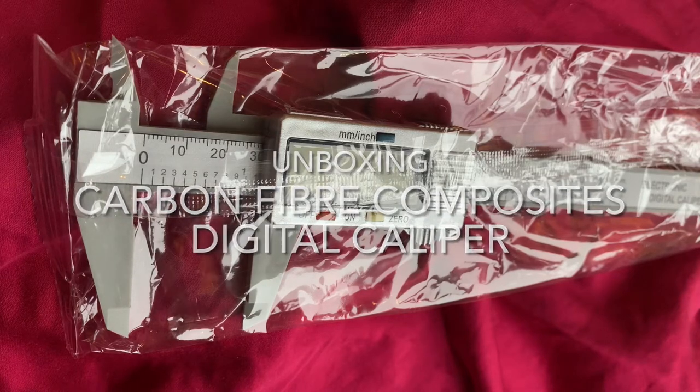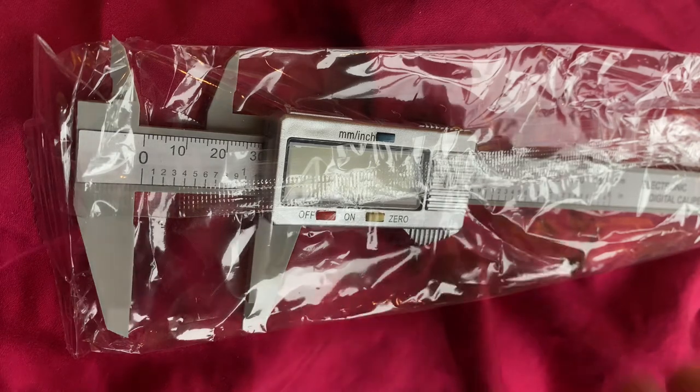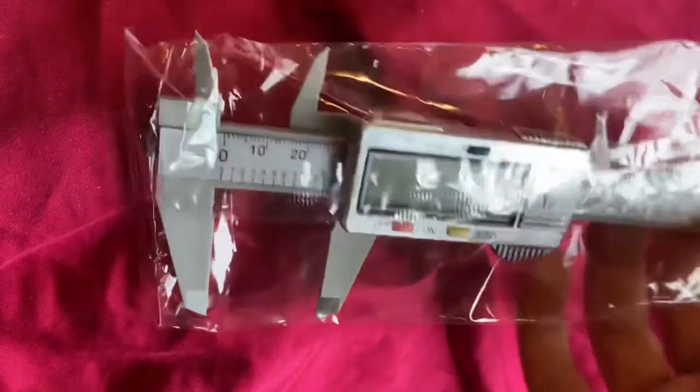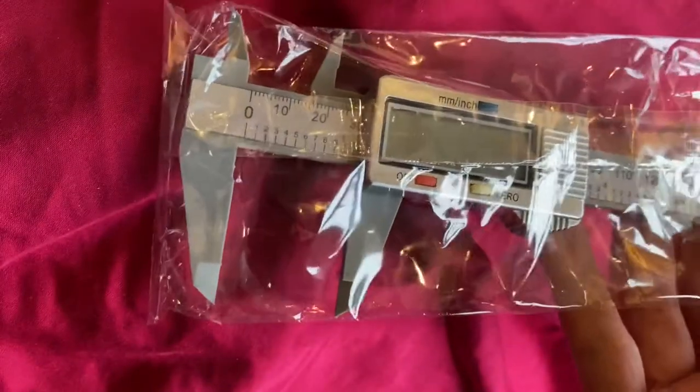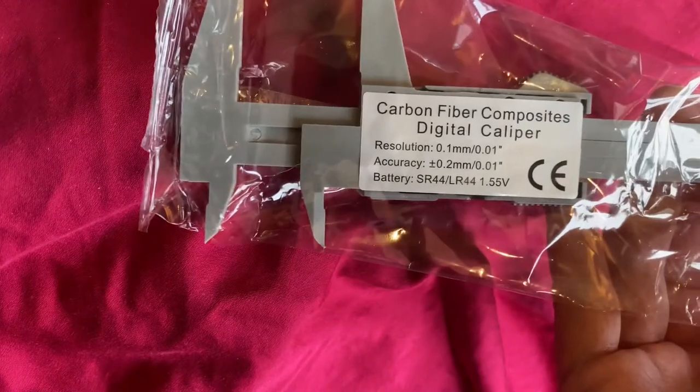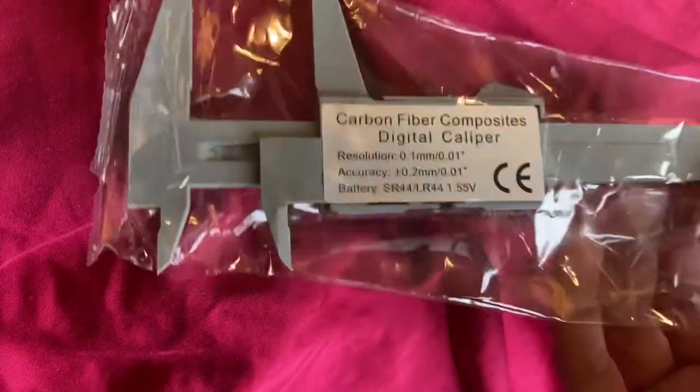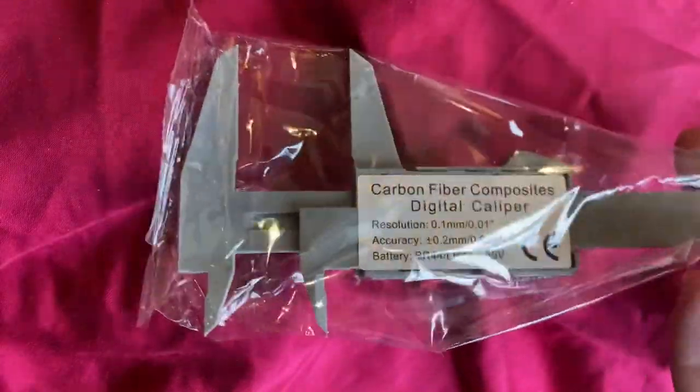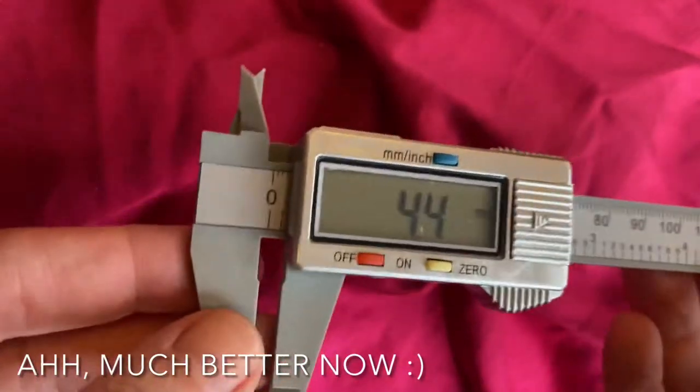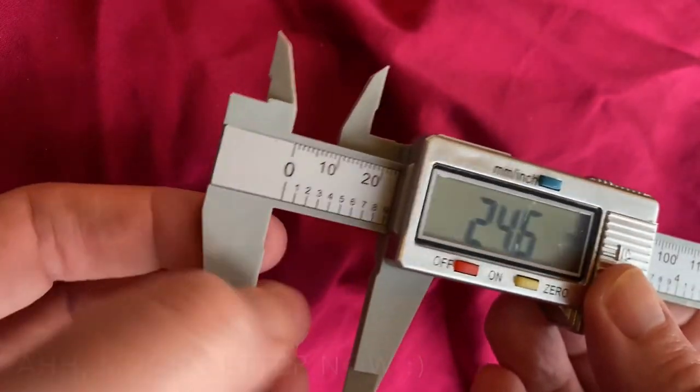Today we've got an unpackaging of an electronic digital caliper. So these are cheap. This is how they come from Carbon Fiber Composites. This is the back. As you can see, it comes in plastic packaging. They're not very protective. Some decent weight to it. These are plastic, I think it's all plastic.